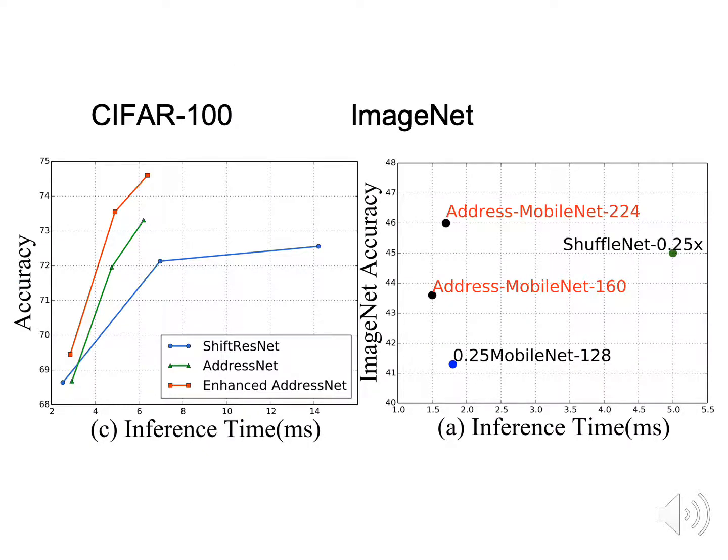Showing these two figs, we did experiments on CIFAR-100 and ImageNet. This fig shows that our network architectures are better than ShuffleNets, MobileNets, and Shift-ResNet family members with low latencies. Thank you.